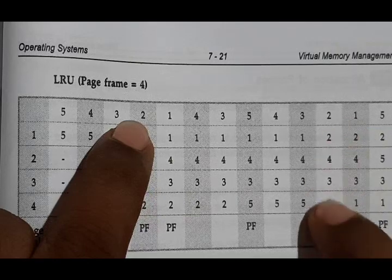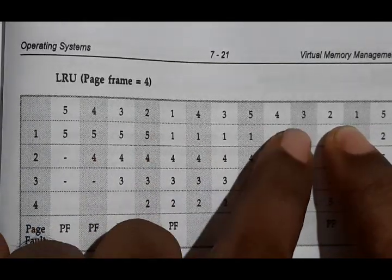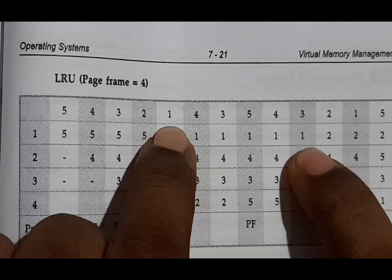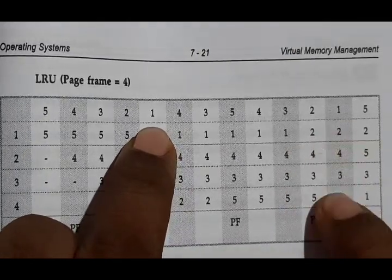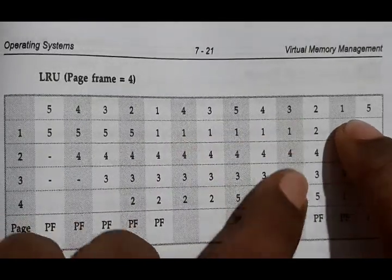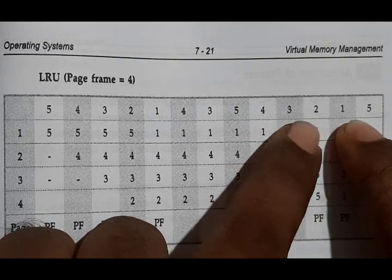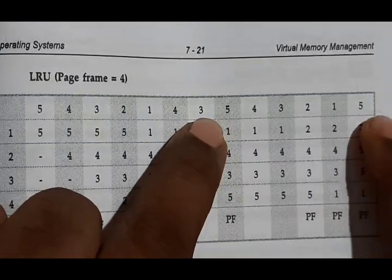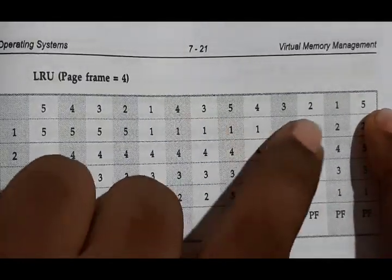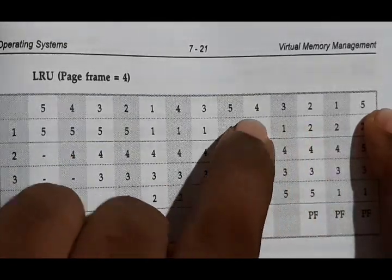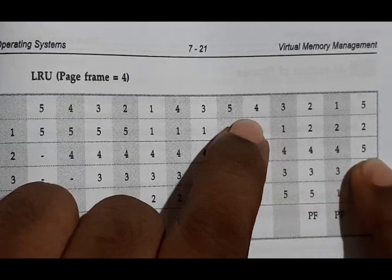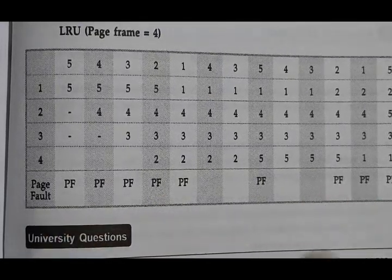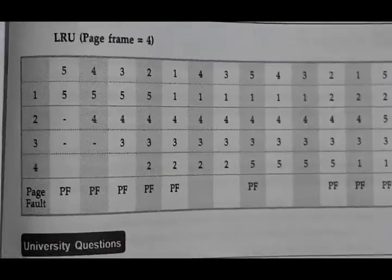Next, page 2 is not present — among 1, 4, 3, 5, page 1 is least recently used — replace 1 with 2. Next, page 1 — among 2, 4, 3, 5, page 5 is least recently used — replace 5 with 1. Next, page 5 is present — no replacement. Among 2, 4, 3, 1, page 4 is least recently used — replace 4 with 5. Counting page faults: 1 through 9 — so 9 page faults occurred in LRU with four page frames. Thank you.